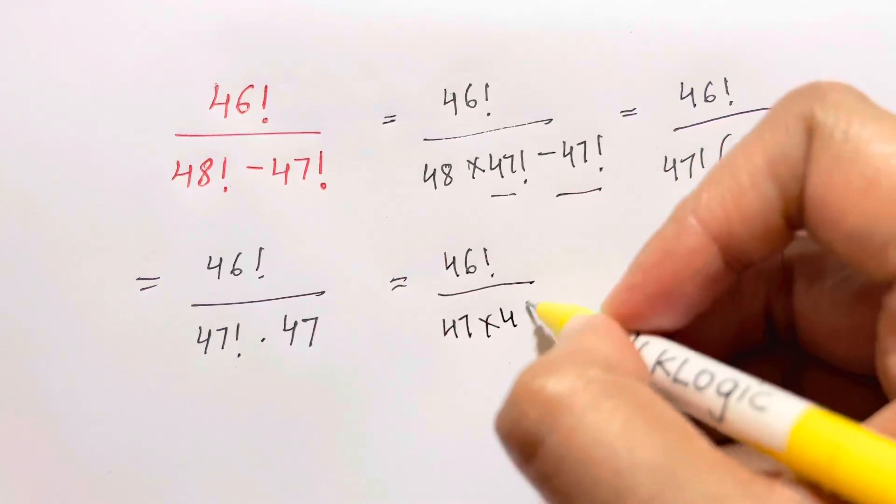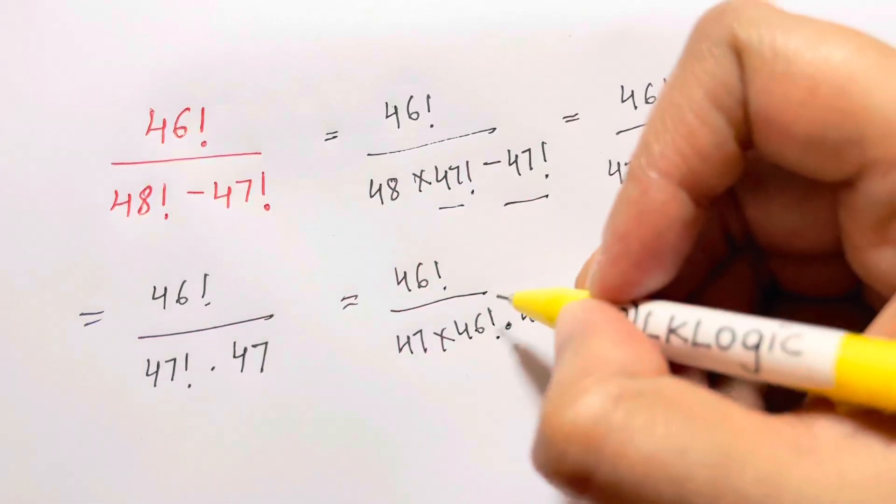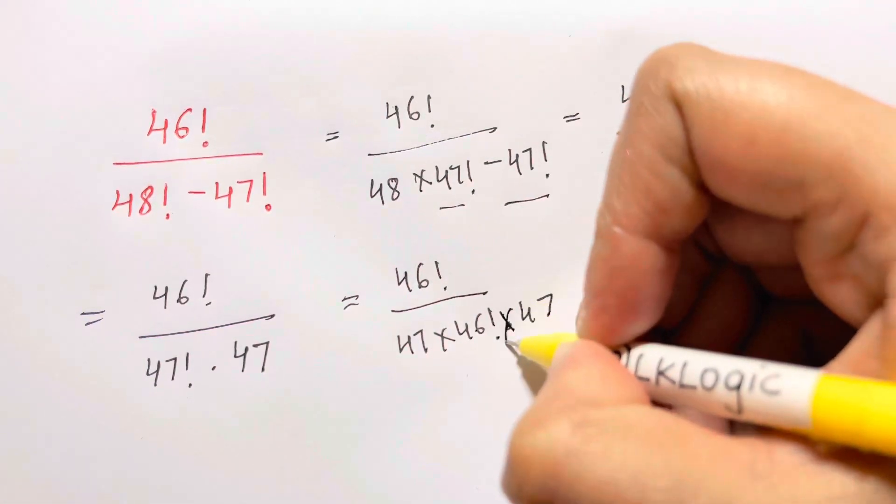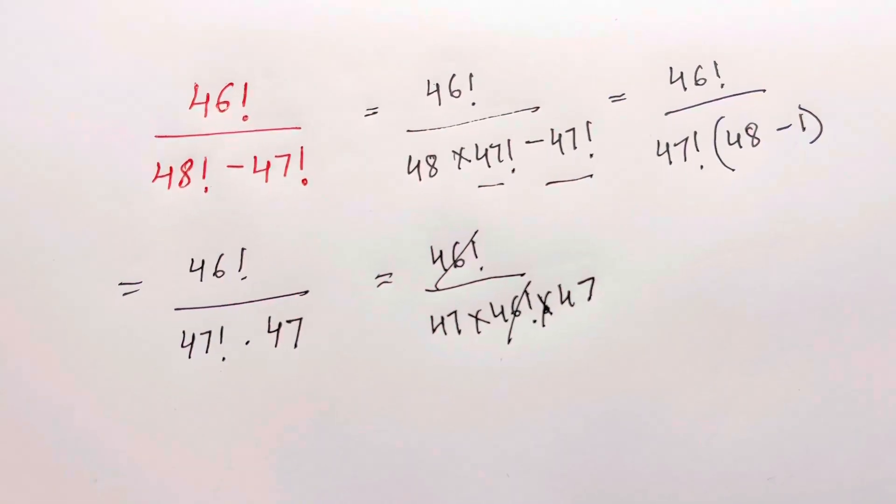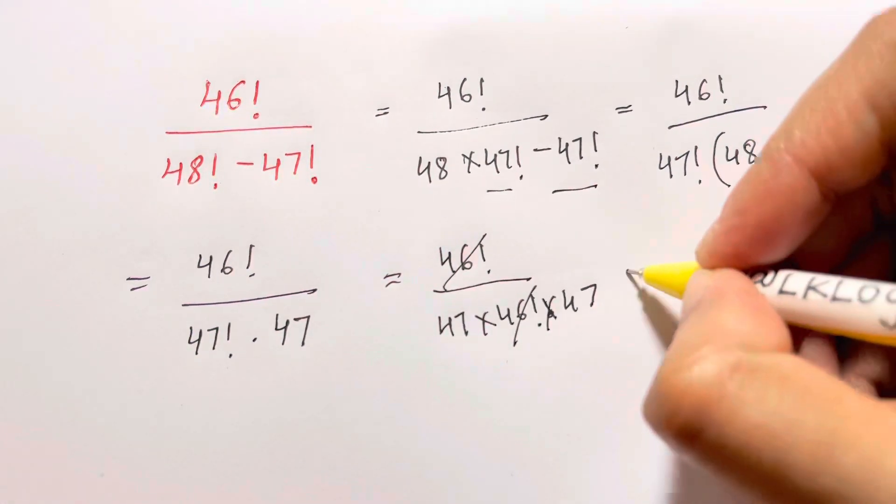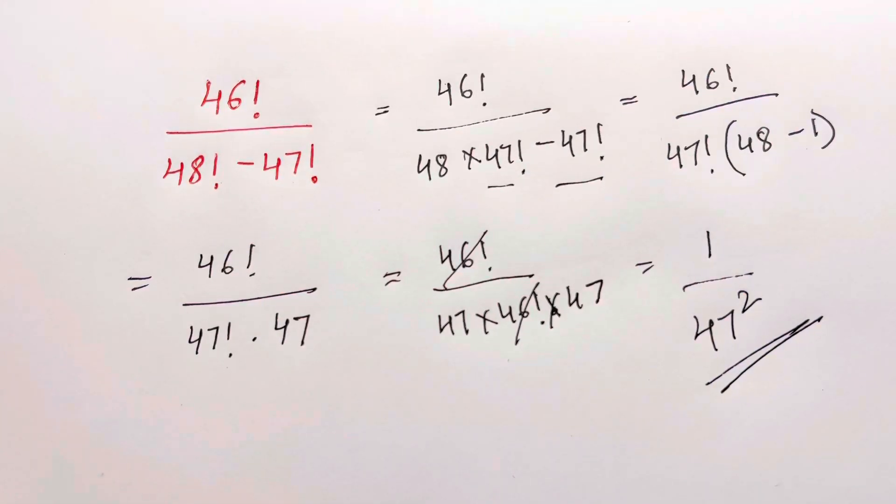I can just write it like this: times 46 factorial. 46 factorial gets cancelled, so we have 1 over 47 squared. And that's our answer. Thank you so much, bye bye, take care.